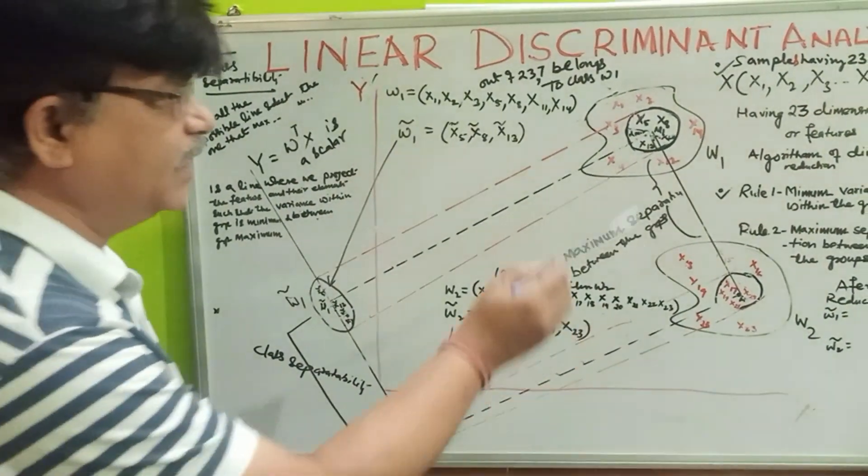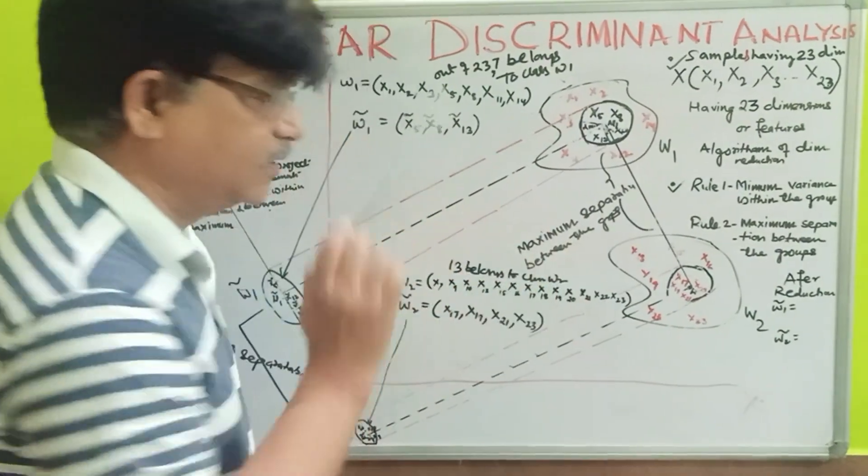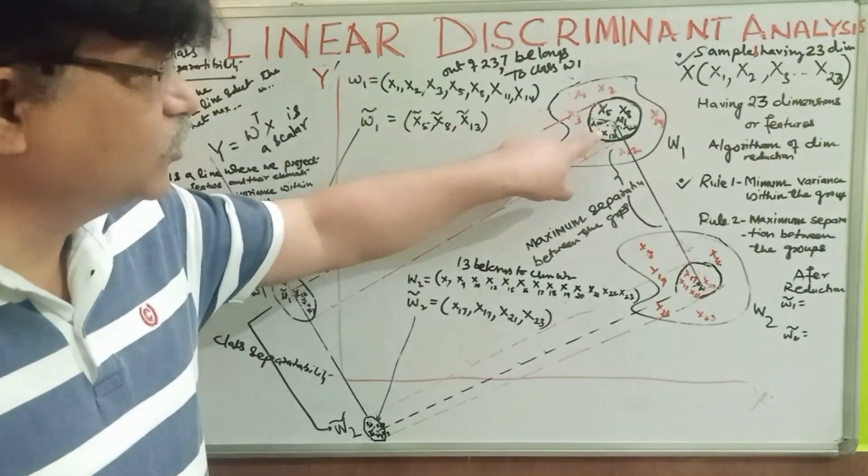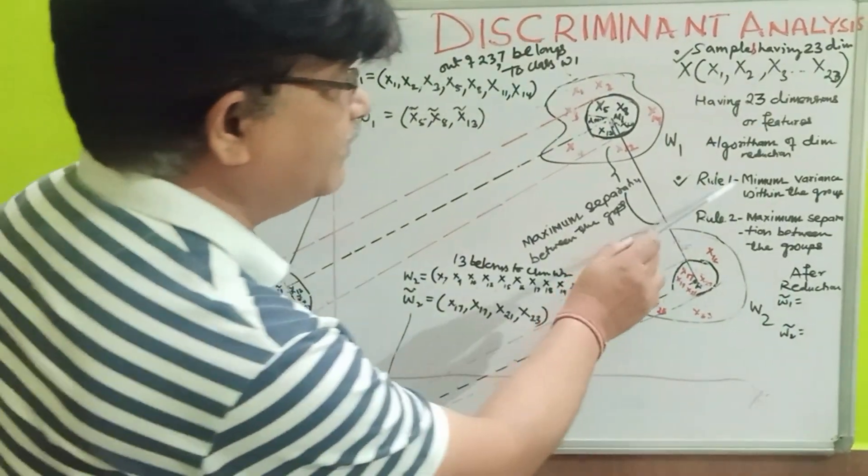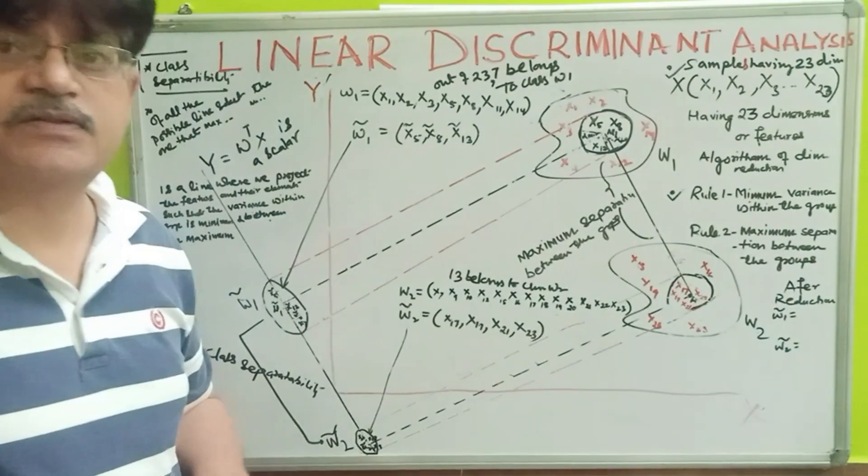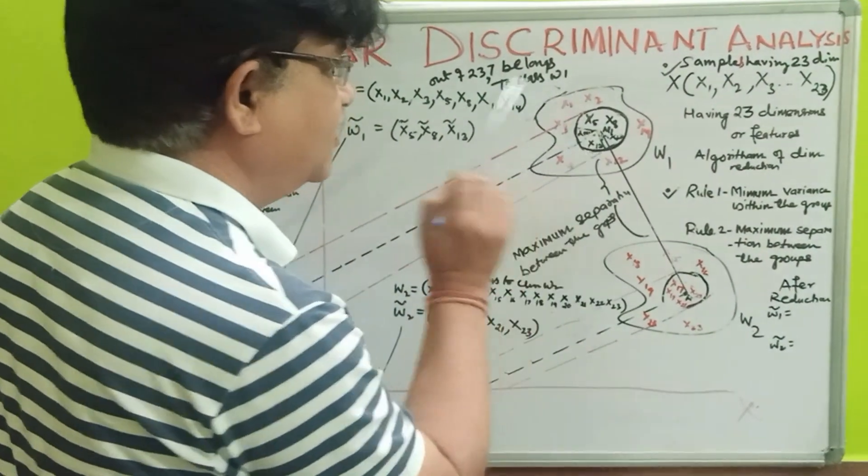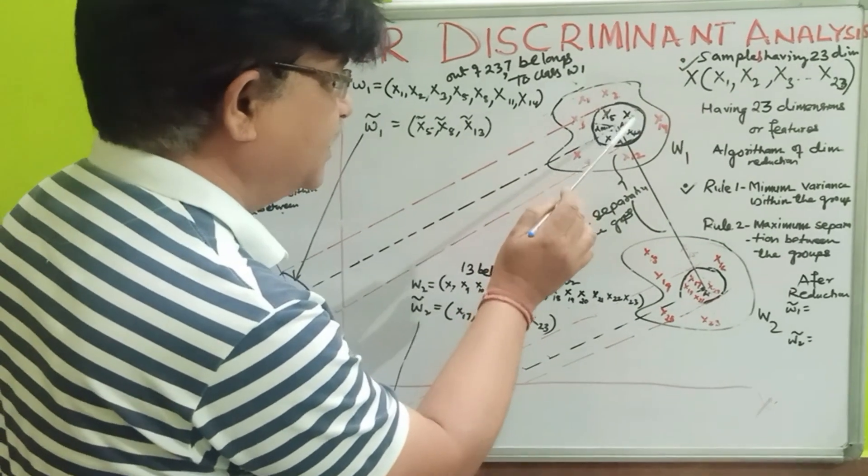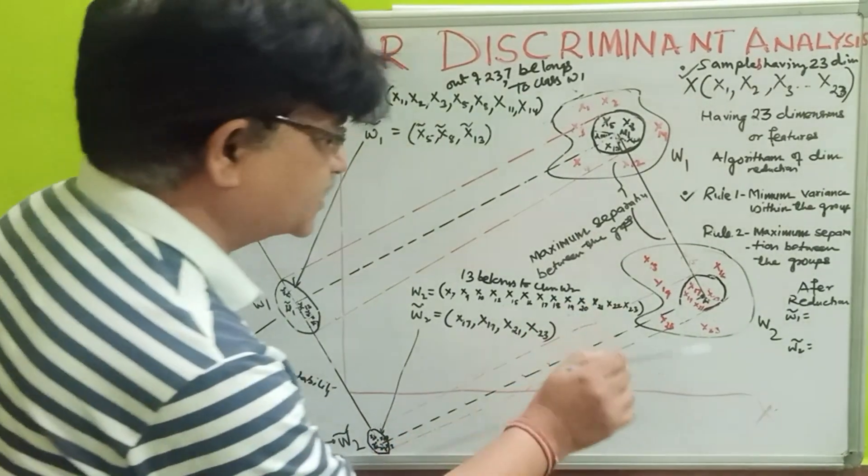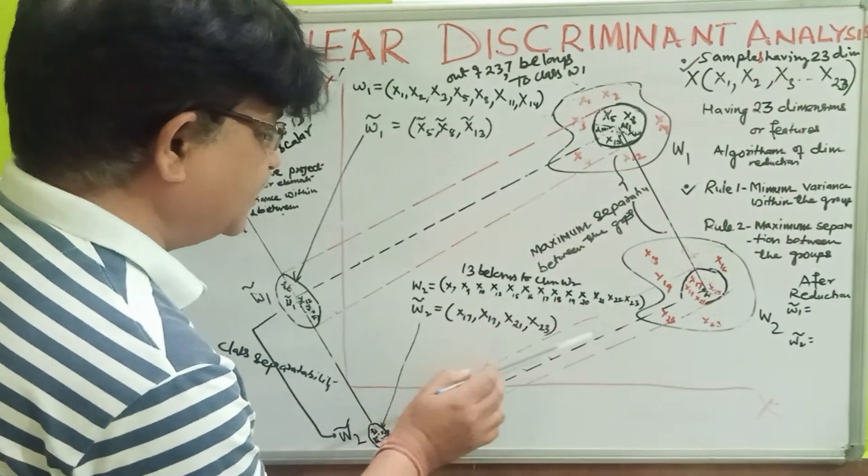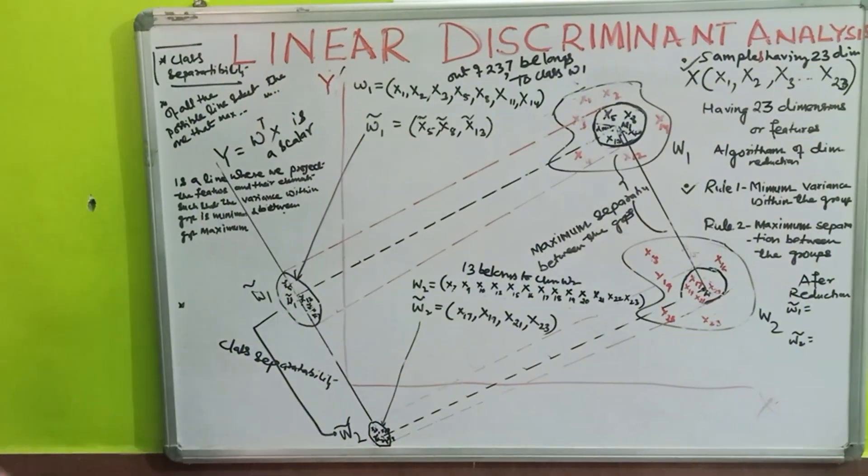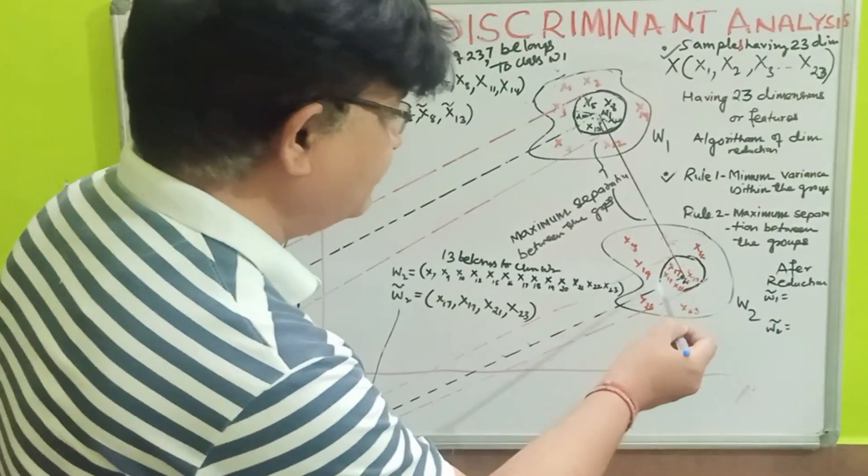Right. You are saying an inner circle, or say, inner curve over here and here. This black curve. What it depicts? I have done an operation over here, that minimum variance within the group. So, when I applied the minimum variance, in that case, I got these samples X5, X8, X1, which have the minimum variance. Okay. And in this case, I have got X17, X19, X21, and X23. These have the minimum variance.